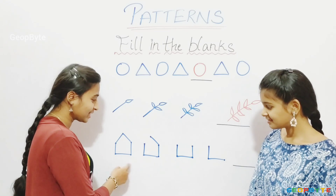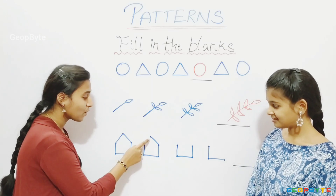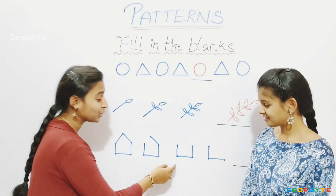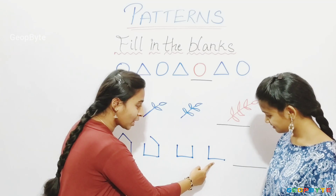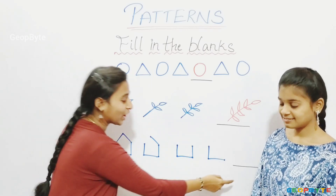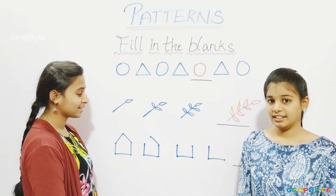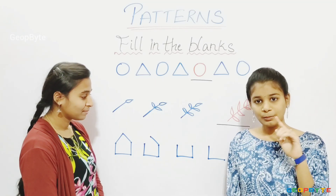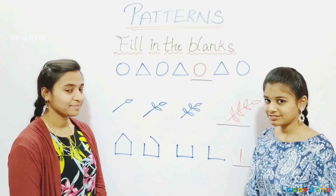Now, let us see this sequence. A house — coming to the next one, one line is removed. Coming to the next one, two lines are removed. What comes in the blank? Yes, there will be only one line — four lines are removed. Try to practice the topic: Fill in the blanks at your home.